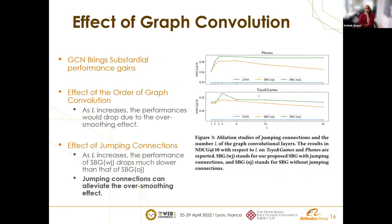We also conducted an ablation study to explore the effect of graph convolutions. The blue line shows the performance of the baseline, the orange line is SBG without jumping connections, and the green line is SBG with jumping connections. The x-axis indicates the layers of graph convolutions. From the figure, we observe: first, GCN can bring substantial performance gains over the baseline; second, as the order L increases, performance drops due to the over-smoothing effect; and third, SBG with jumping connections drops much slower than without it, confirming that jumping connections alleviate over-smoothing.